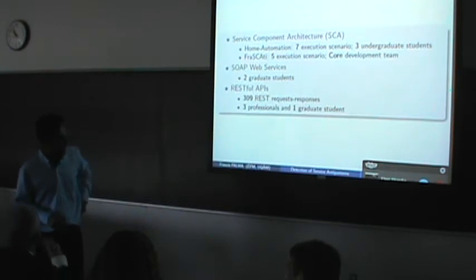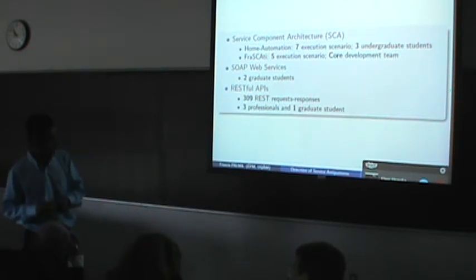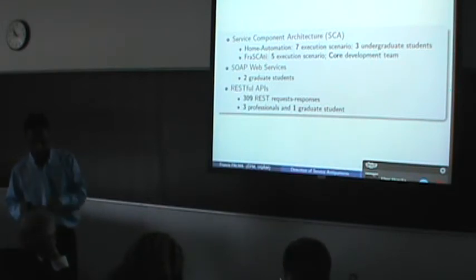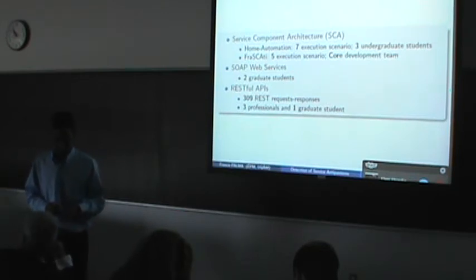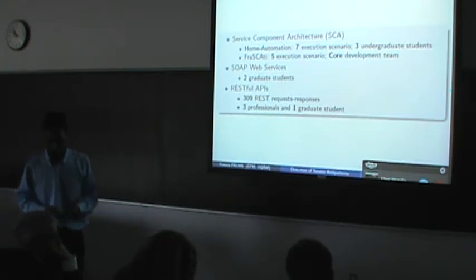Did they agree with each other? For example, for REST we had three professionals, and if they didn't agree on some parts of the validation, they mutually discussed. If they weren't available, we took the majority vote. Out of three, if two of them agreed, we considered that as oracle. Sometimes we took majority vote, and sometimes, for example with web services, we had two graduate students and there's no majority option, so they must comply with one conclusion.